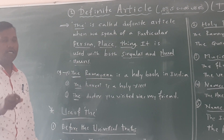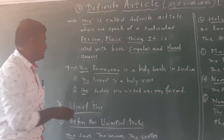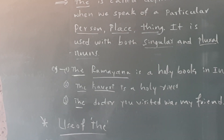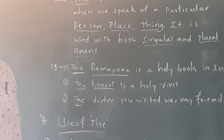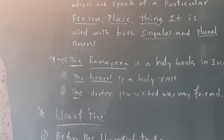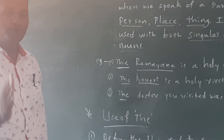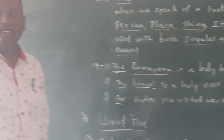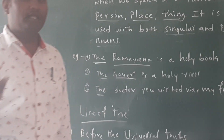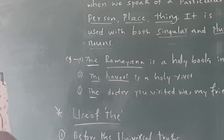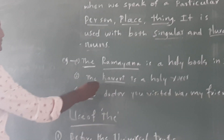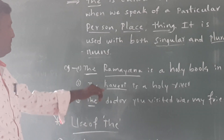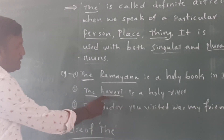Second example: 'The Kaveri is a holy river.' Kaveri is the name of a river. Before the names of rivers, we use the article 'the'. That is why we use the article before the name of the river Kaveri.